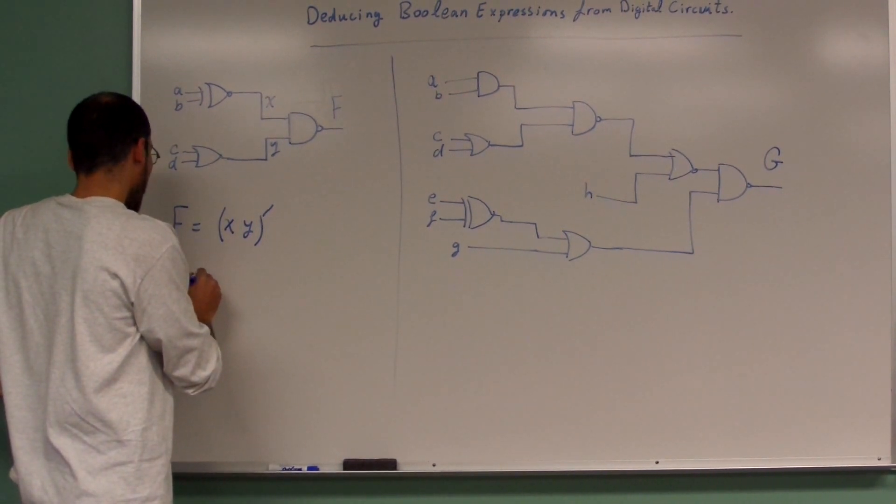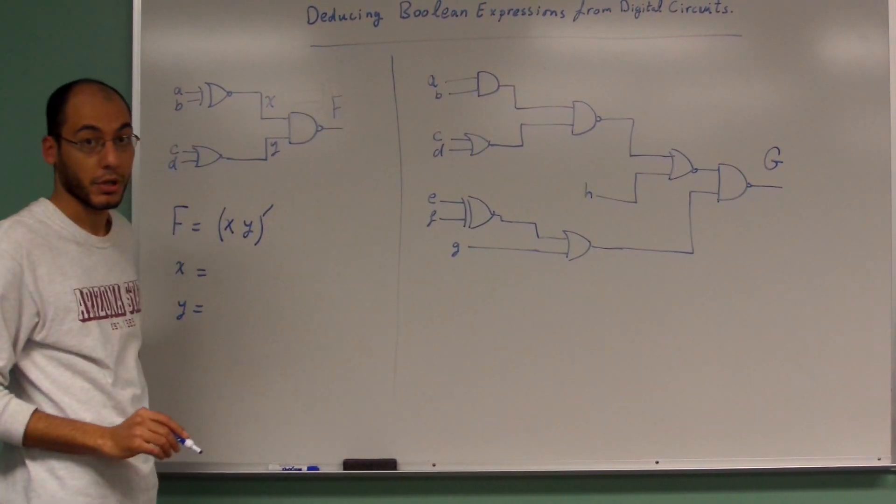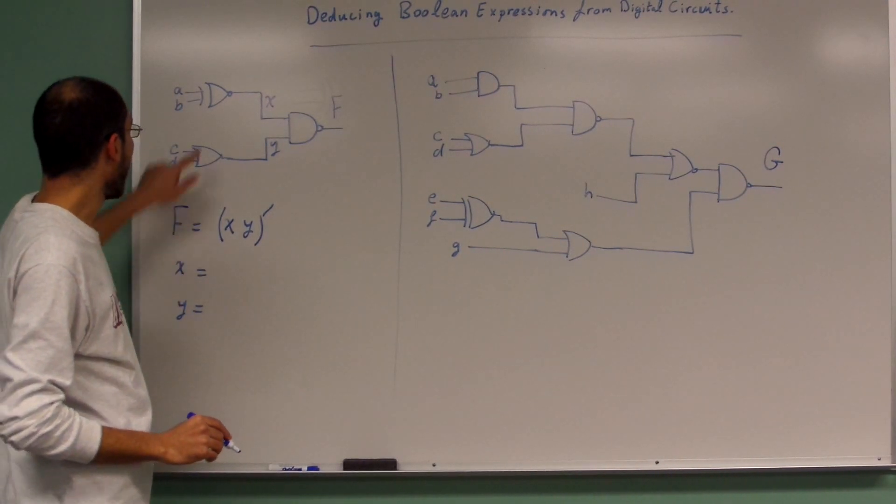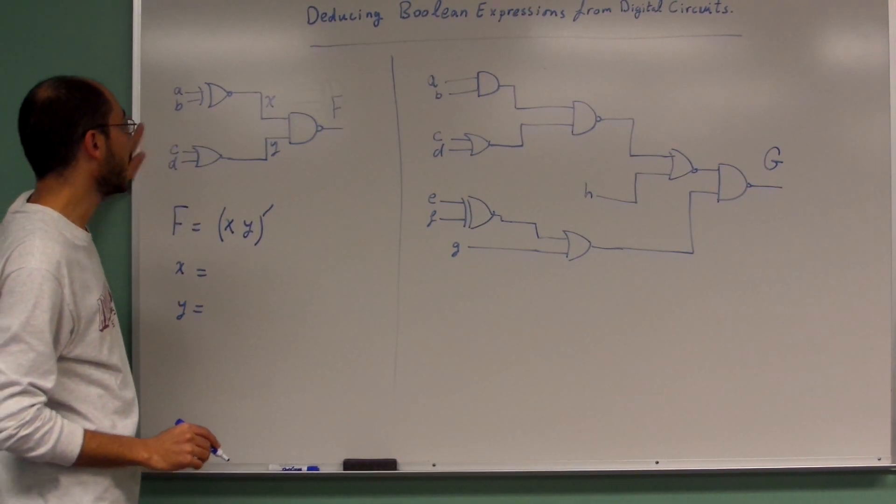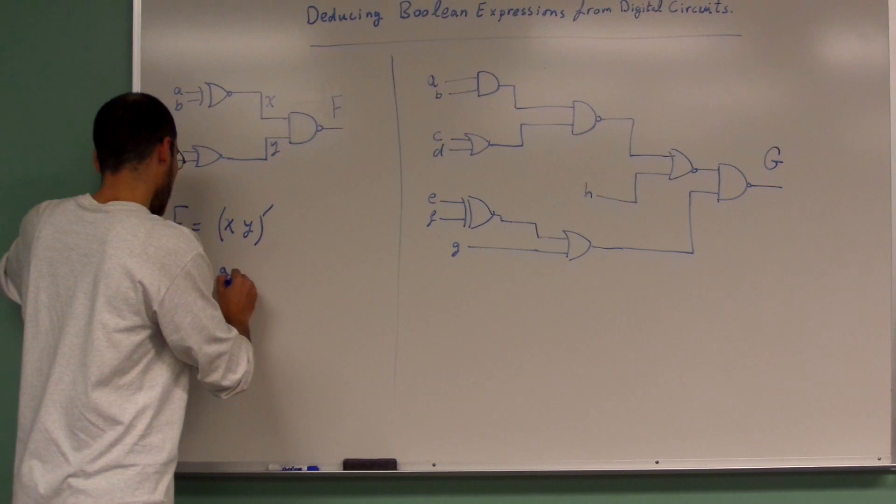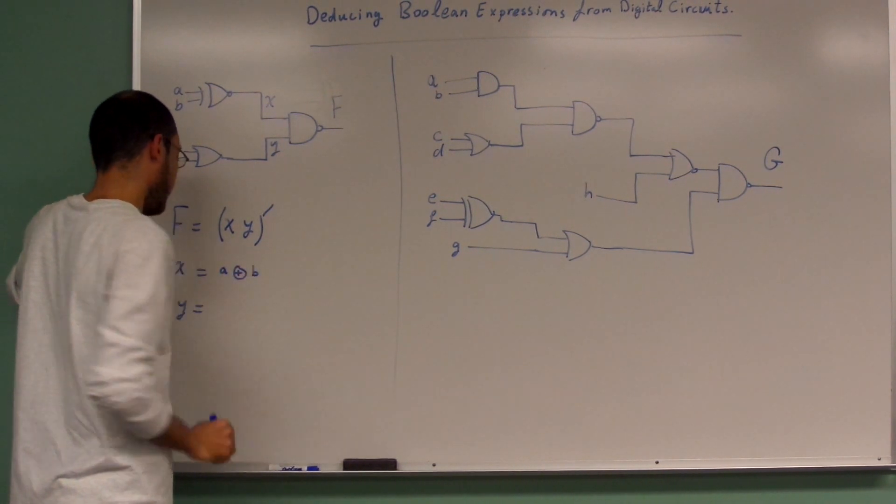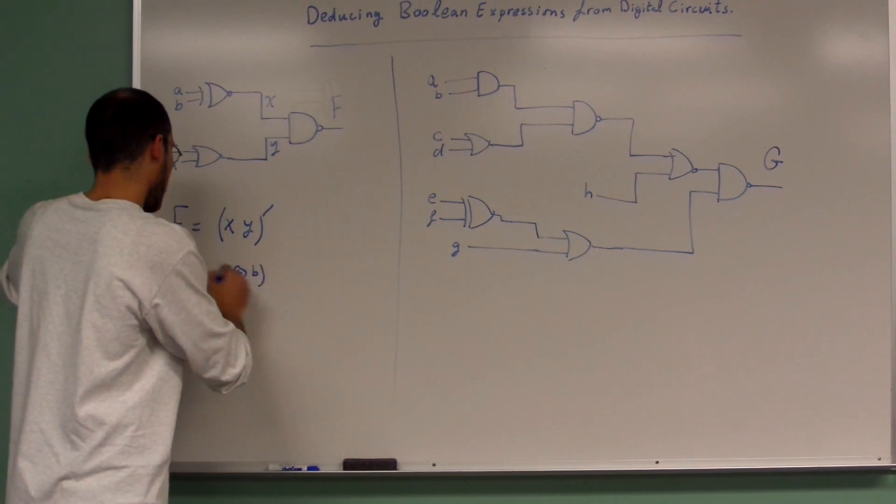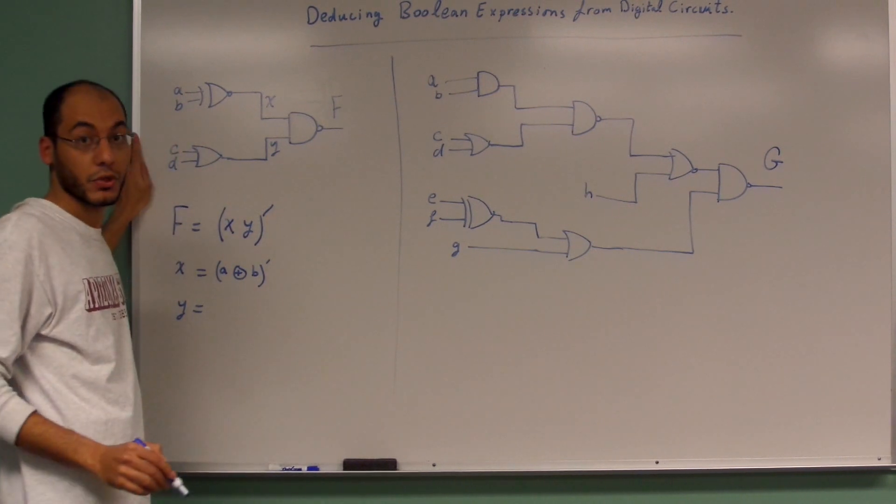Then you write down an expression for X. What is X? X is the XOR between A and B, so A XOR B, and then you have not. So it's A B bar plus A bar B.